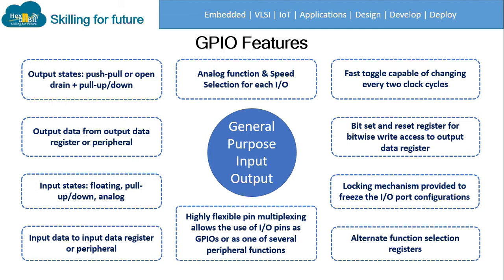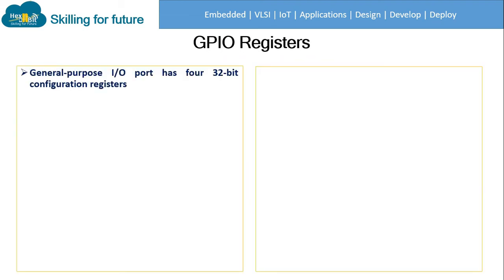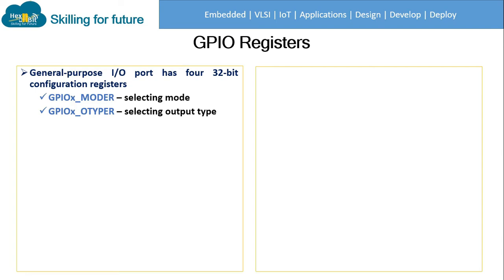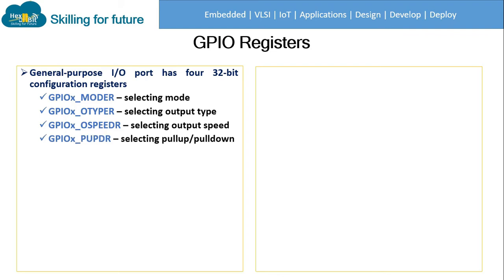Let's get to know the registers used in GPIO. Although we will not be directly accessing those registers, we should be familiar with them. A GPIO port has four 32-bit configuration registers. The first is the GPIO mode register, which allows selecting the mode — input, output, or alternate function. Next is the GPIO output type register, for selecting push-pull or open drain. Then the output speed register for the speed of a particular pin, and finally the pull-up pull-down register to configure pull-up and pull-down for a particular pin.